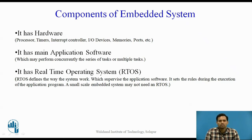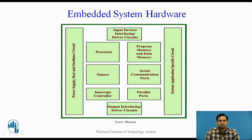The operating system decides the set of rules according to which the hardware and application software will work. A diagram shows the different hardware components used in an embedded system, which include a power system, reset circuitry, oscillator circuitry, input devices or interfacing circuits, processor, program memory and data memory, timer, serial communication ports, interrupt controller, parallel ports, output interfacing driver circuits, and application-specific circuits.